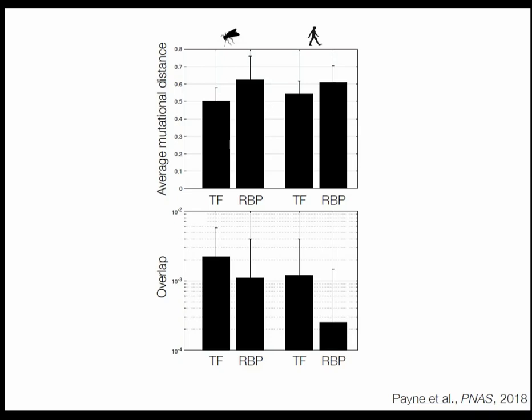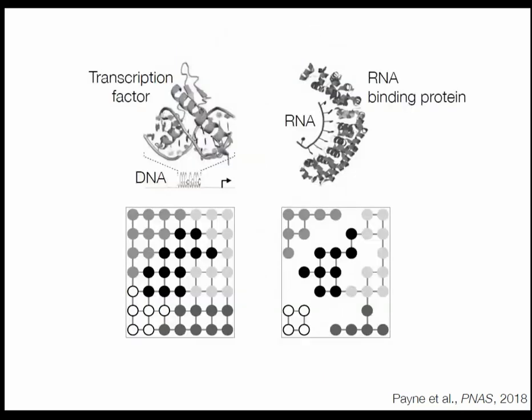Regulatory proteins with the same binding domain typically bind similar sets of sequences, so the data set as set up should stack the deck in favor of RNA binding proteins having more overlap — yet we observed the opposite. This really suggests that the architecture of these genotype-phenotype maps is fundamentally different. It seems that the genotype networks of RNA binding protein binding sites are farther away from one another in the space of possible binding sites, and in that regard they are less evolvable than transcription factor binding sites.